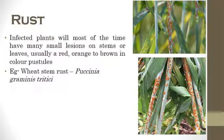The first one is rust. Red to orange or brown color rust pustules appear on the leaves and stems. The best example is wheat stem rust which is caused by Puccinia graminis tritici. If we understand the life cycle of wheat stem rust, it will be very easy to understand almost 50 to 60 percent of the entire pathology.